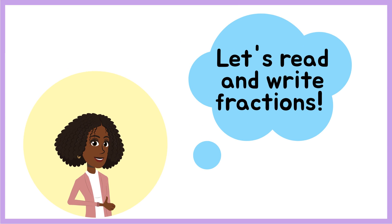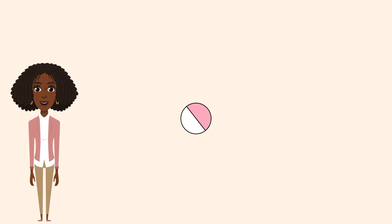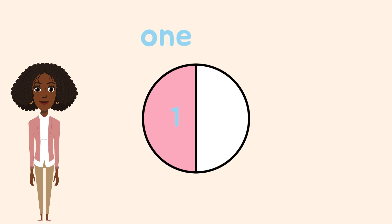Now that we know all about the different names of fractions, let's talk about how we read and write fractions. To name a fraction that is shaded in, first I'll look at the amount that is shaded, which is one. Next, I'll see how the whole is partitioned — the whole is partitioned into halves. Since only one of the two equal parts is shaded, we will say one half, because half means one part. So we will say one half of the fraction is shaded in, instead of one halves. If we said one halves, that wouldn't make sense, because halves means two equal parts and both parts aren't shaded in.